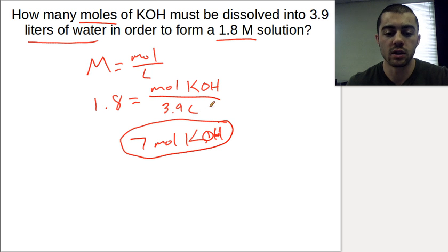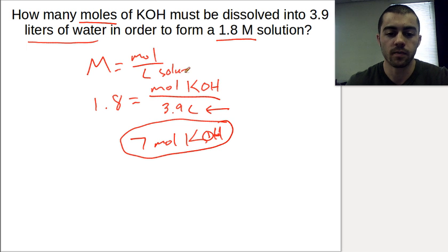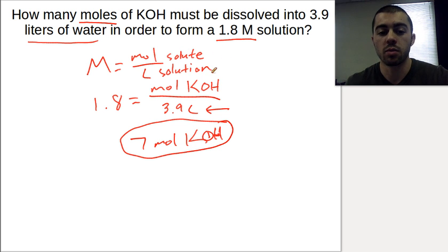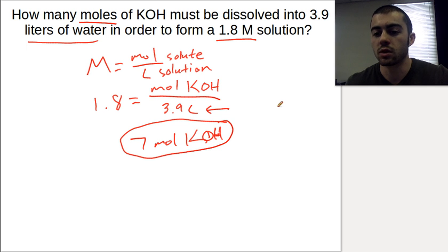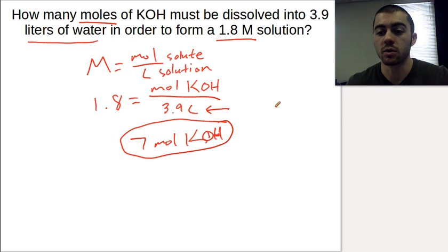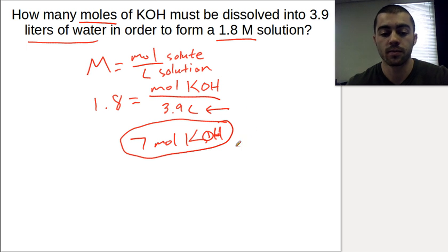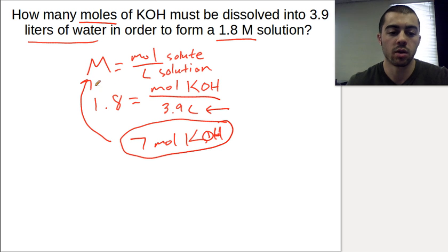A quick note: the problem says 3.9 liters of water, but in the molarity formula this is liters of solution. The assumption we're making is that the solute particles don't contribute any appreciable volume, so the volume of the solvent equals the volume of the solution. Realistically, this is usually accurate. At very high concentrations it might alter the volume slightly, but for practical purposes we assume the particles contribute no volume. So we get 7 moles of KOH.